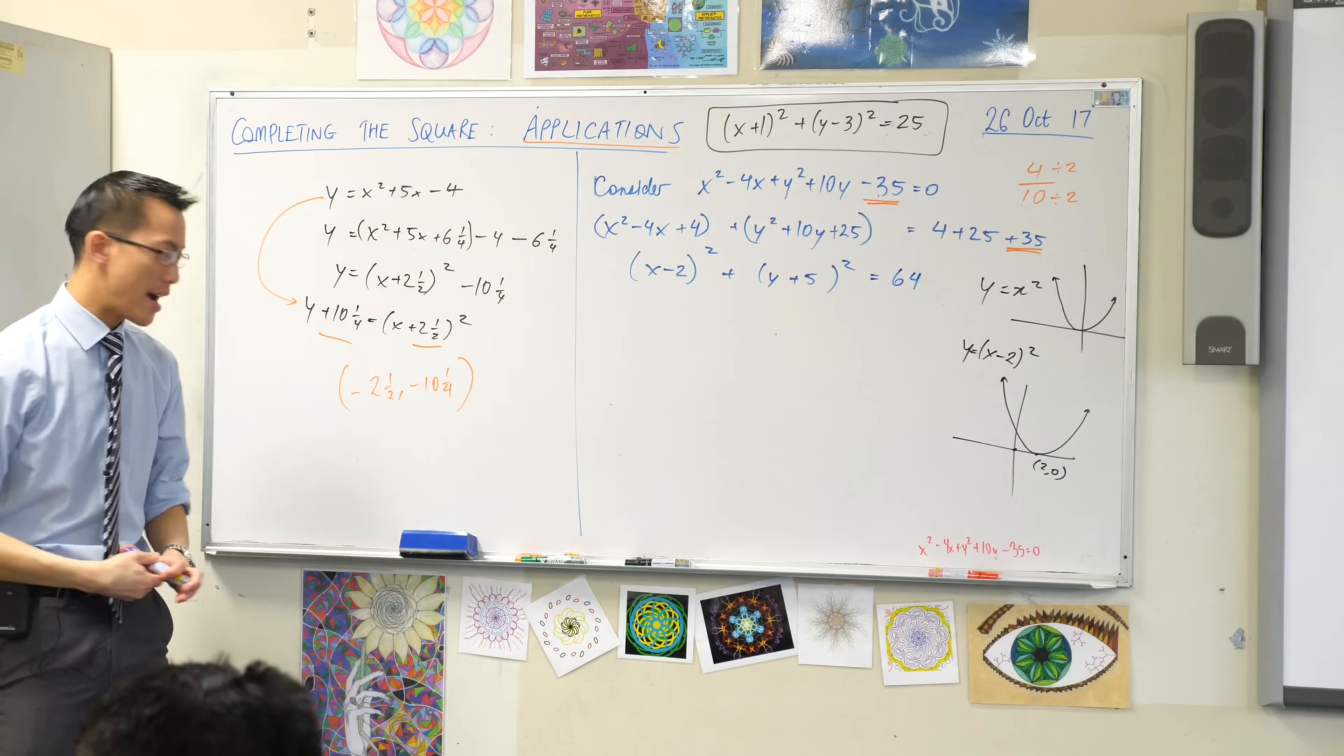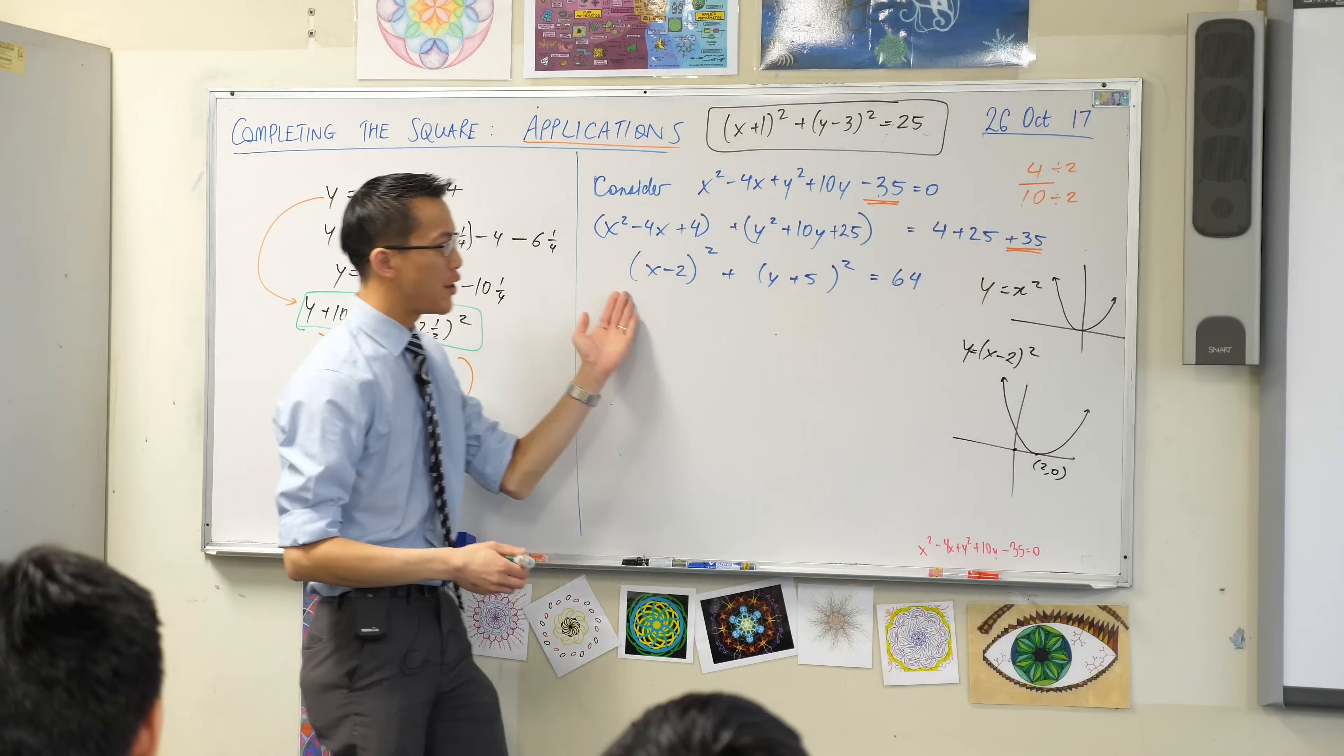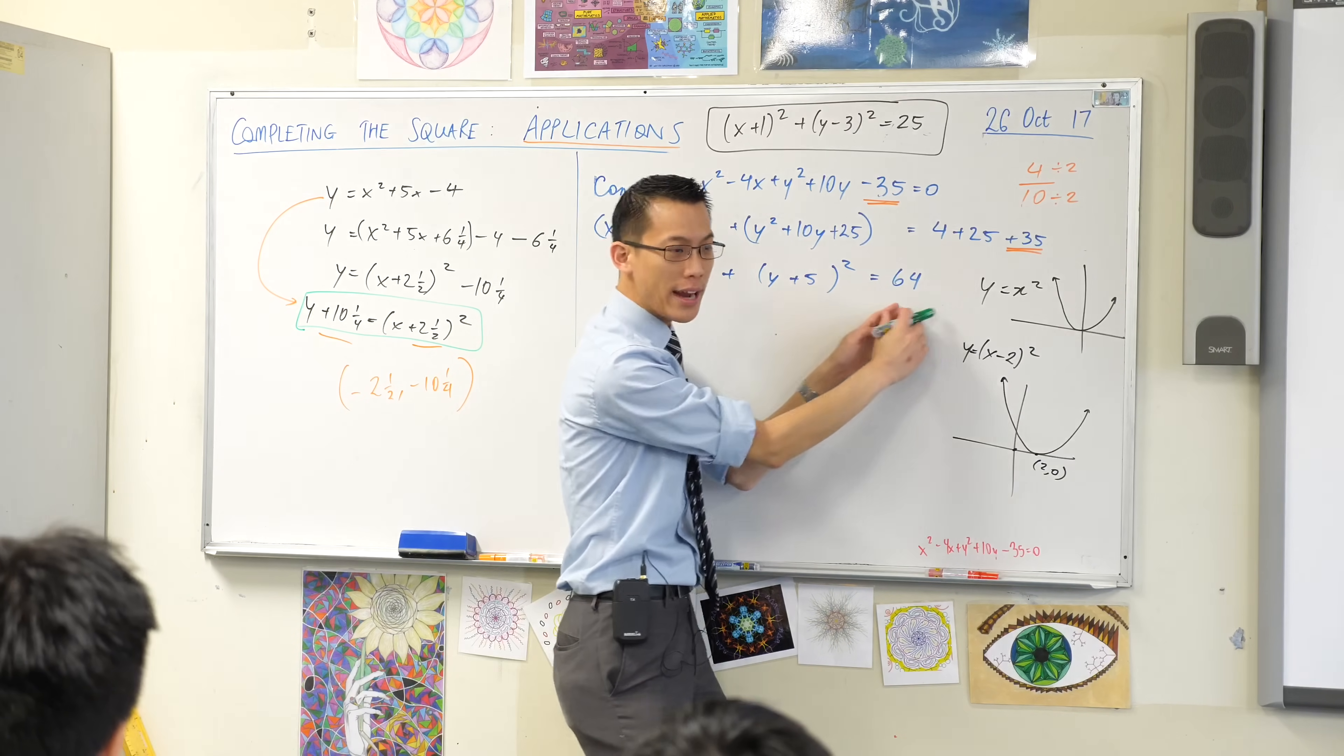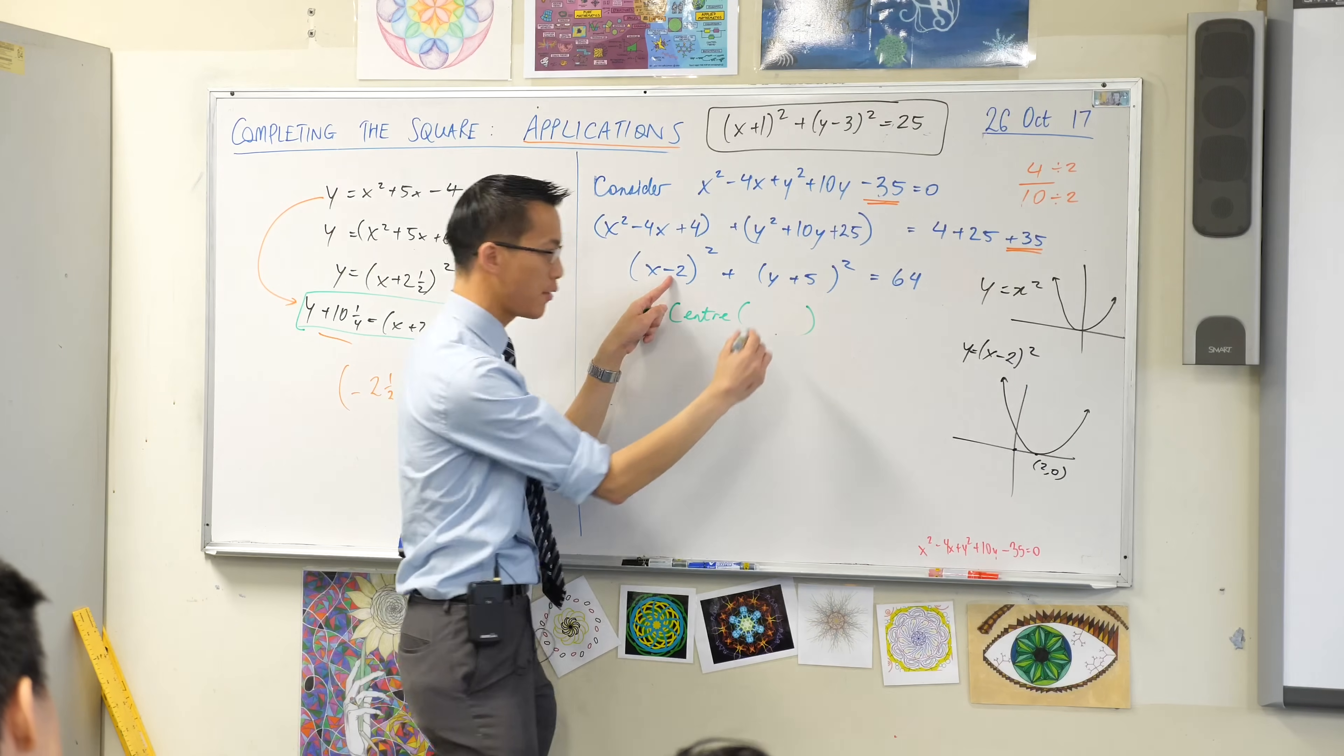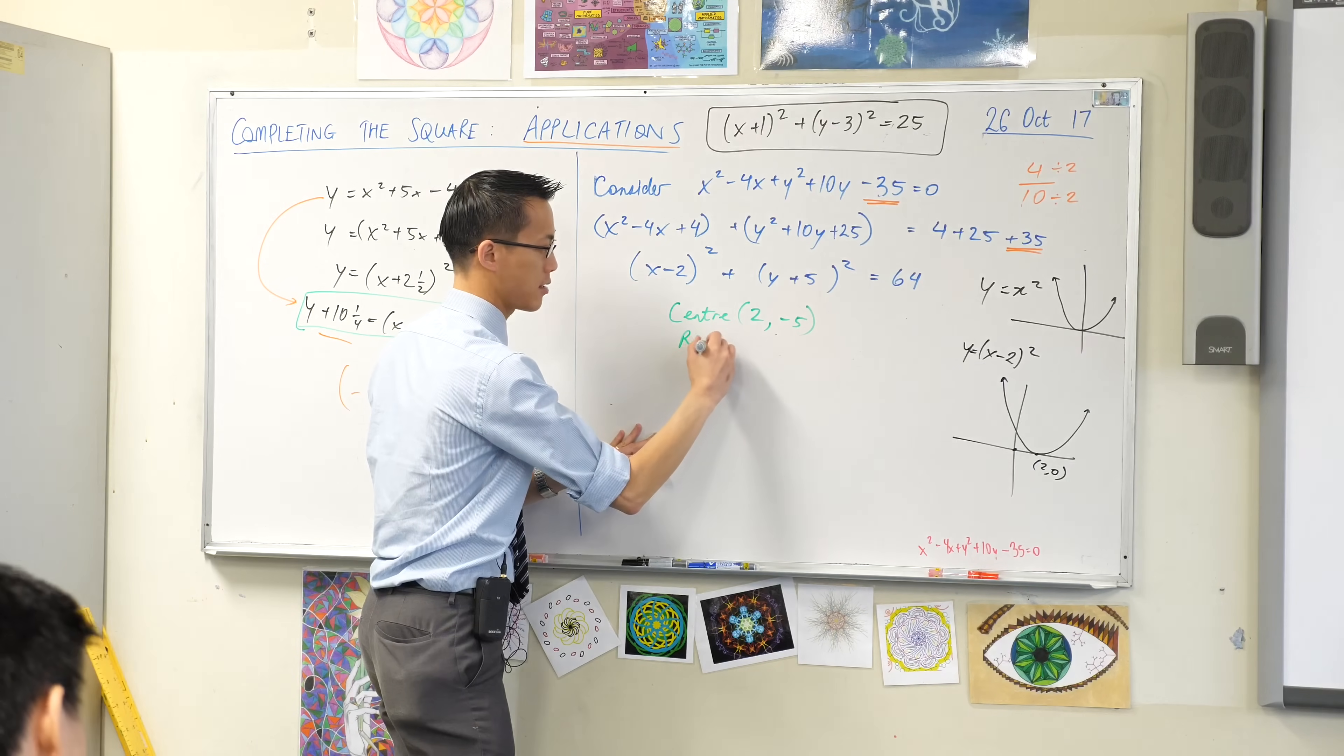So remember I told you, if you get into this form over here, you can just read off the vertex. Now that I'm in this form here, I can just read off the center and the radius. What's the x-coordinate? Positive 2. It's the opposite of that guy. The y-coordinate is negative 5. It's the opposite of that guy. And of course you can also see the radius, and it's just 8.